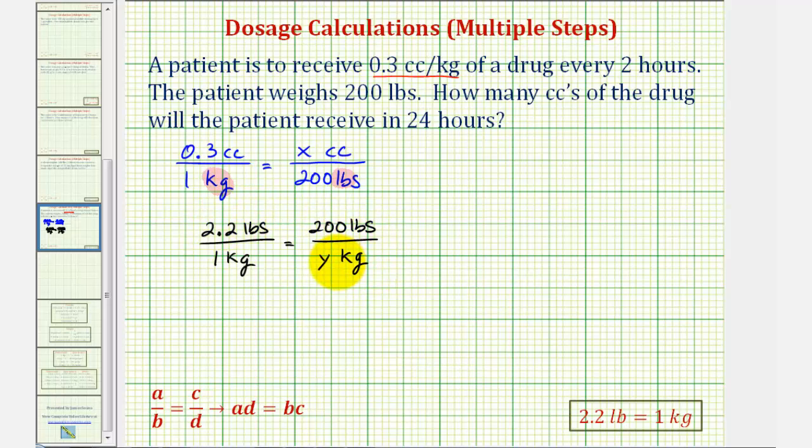Once we solve this proportion for y, we can perform a substitution here in kilograms for 200 pounds, and then solve this proportion for x. Looking at our conversion proportion, notice how the units on the top are the same, and the units on the bottom are the same, so we can go ahead and cross multiply and solve for y.